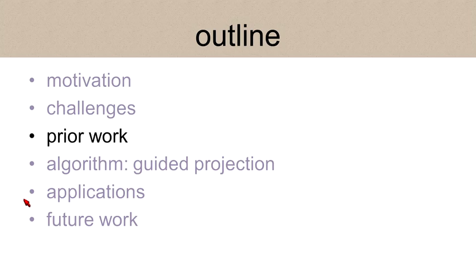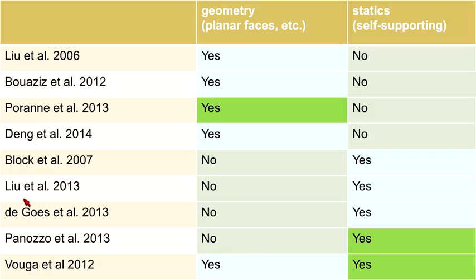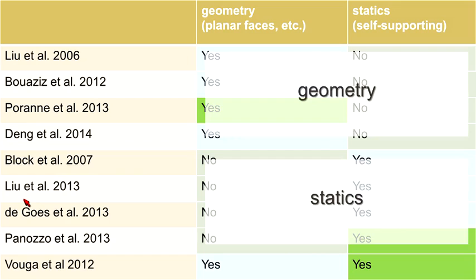Before getting to the details of our work, I'd like to mention some previous studies, where most can be categorized onto either the geometric side or the static side. The green cells indicate greater similarity to our approach. The most similar is done by Vouga and colleagues, who presented self-supporting quadrilateral meshes with planar faces. However, geometric and static constraints were handled at two different stages, sacrificing interactivity when both are required simultaneously.